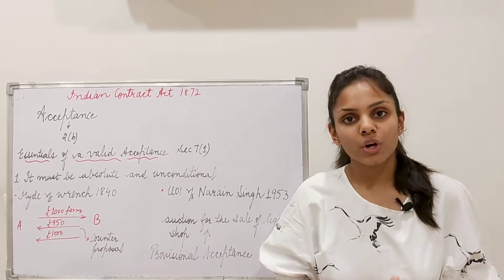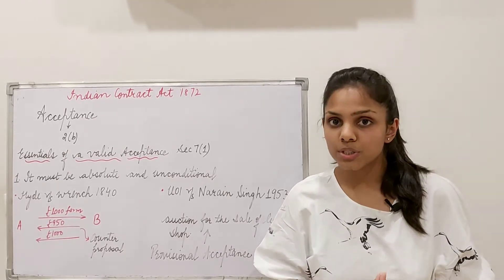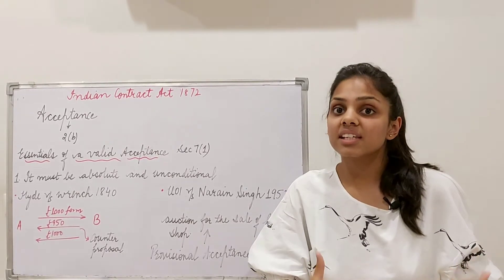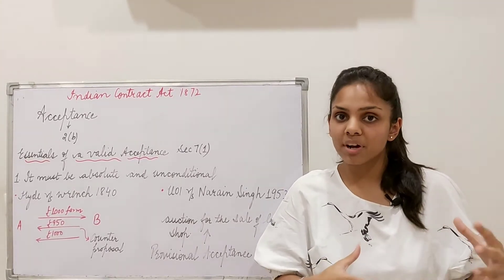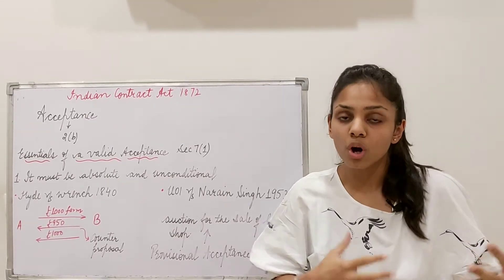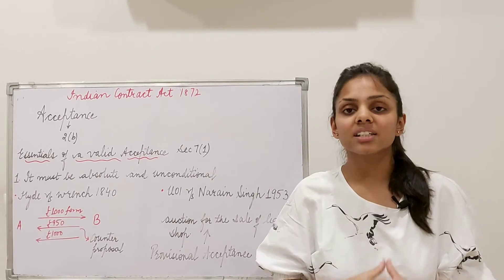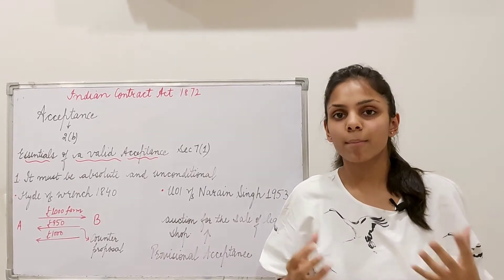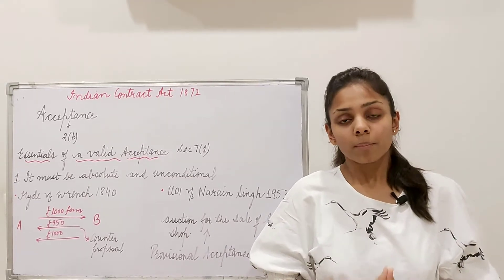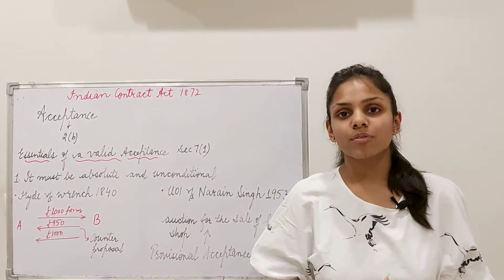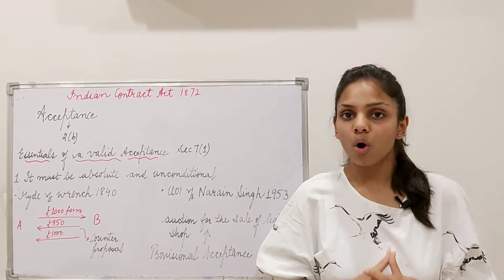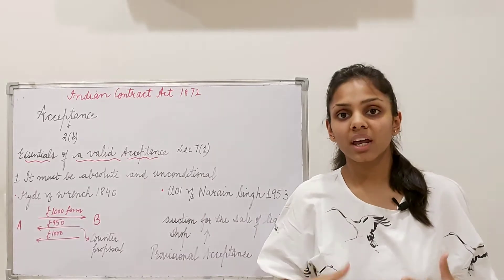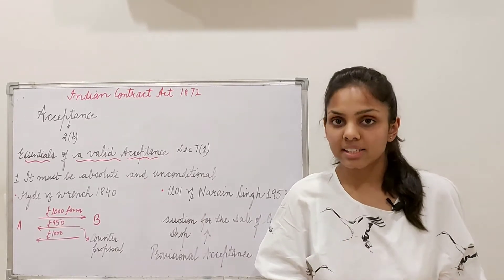So Section 2 Clause B of the Indian Contract Act says that when a person to whom a proposal is made signifies his assent — shows his yes or no to the proposal given by A — that is termed as an acceptance. We will be discussing all the essential elements of a valid acceptance. Just as we discussed essential elements for offer, today we are doing acceptance — and every acceptance is not valid in itself; there are certain essential elements.